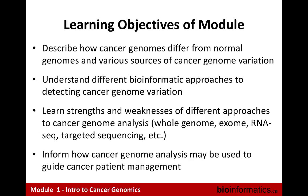The whole point of this module is to understand how cancer genomes are different from normal genomes, how we can use bioinformatics to measure those differences, thinking about different types of genomic assays and how they read out different types of genome variation, and how we can take what is essentially a list of differences and assign those clinical relevance and actionability.